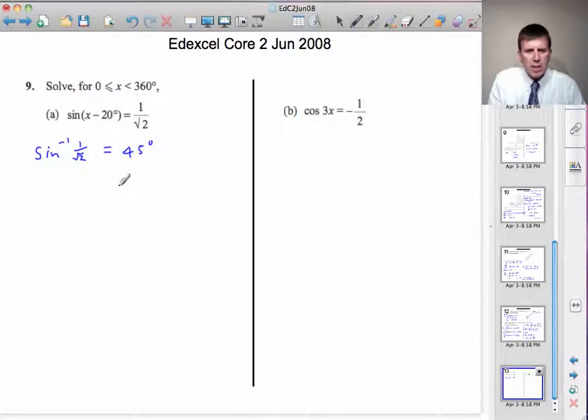And to get all the answers, we look at a CAST diagram, or some people call it an all-sin-tan-cos diagram. And here we mark on 0 degrees, then come in anticlockwise. In the first quadrant, all three ratios - sine, tan and cos - are positive. In the second quadrant, sine is positive. In the third one, tan. And in the fourth one, cosine. So, CAST, CAST diagram.